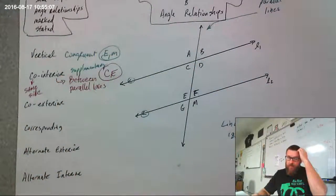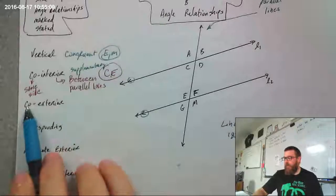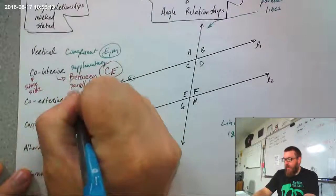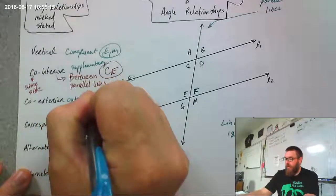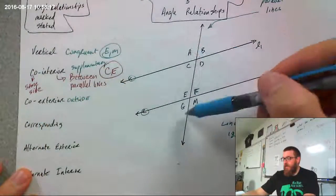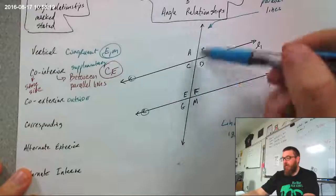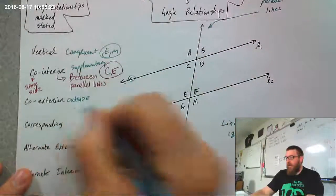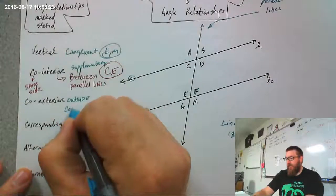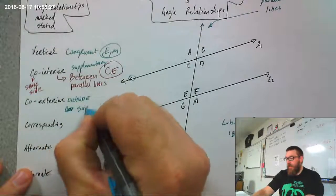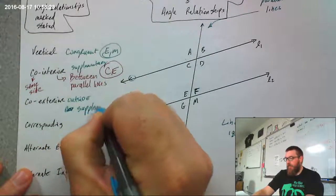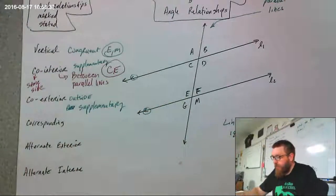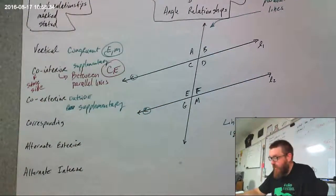Co-exterior angles — same deal. "Co" means the same side, but exterior means outside of the parallel lines. So A and G, both on the left side and on the outside of the parallel lines, are co-exterior. They are also supplementary — they add up to 180 degrees. So A plus G equals 180.